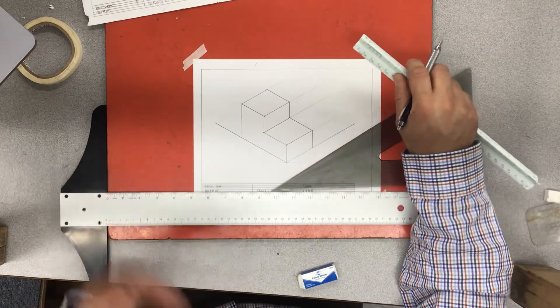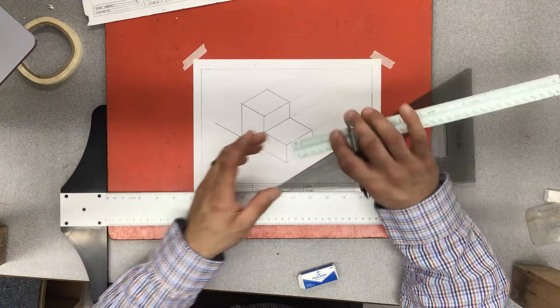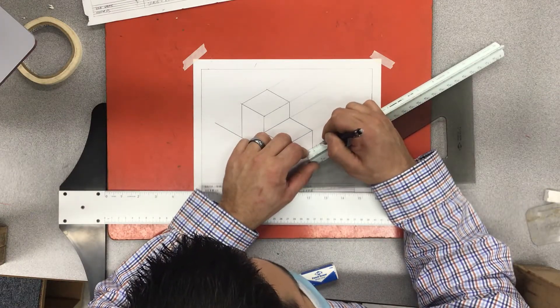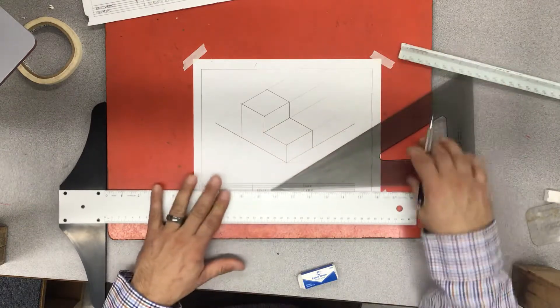Now how do we dimension an isometric? That's the next trick. We still do the quarter inch and the half inch spacing. We take our ruler, we place it in the corner, and we mark quarter and we mark half.